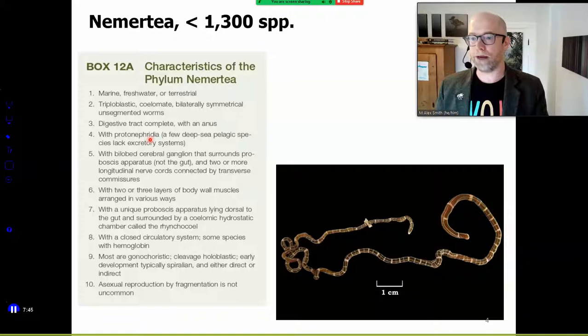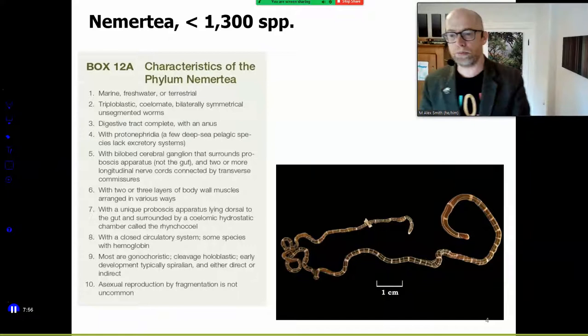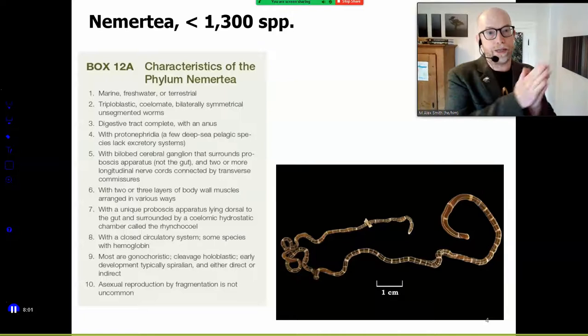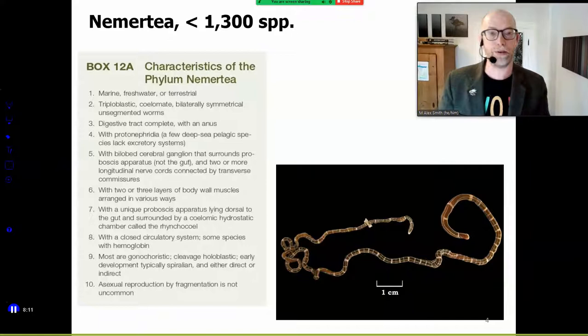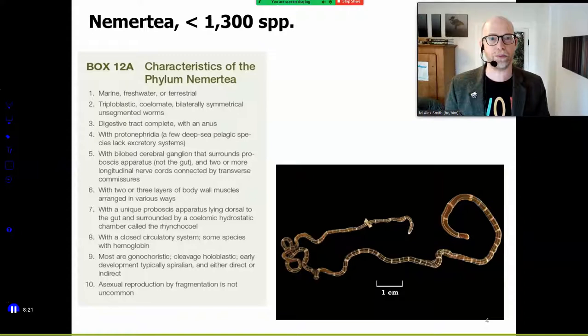They have this unique proboscis, and that to me is the most amazing thing we're going to talk about with these nemertean worms. Morphologically they're quite cryptic, and this is true for all three of the taxa — that is one of the unifying stories. As we go through, we're going to shout out to species discovery, species naming, and different tools you have at your fingertips that we wouldn't have had back when I was sitting in your space.